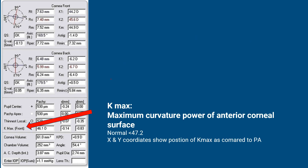Kmax is the maximum curvature of the anterior surface of the cornea. Normally it is less than 47.2 diopters. If the value is more than 47.2, that is highly suspicious of keratoconus. The X and Y coordinates show the position of Kmax as compared to the Pachyapix.